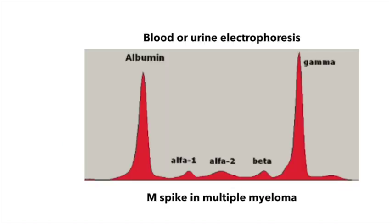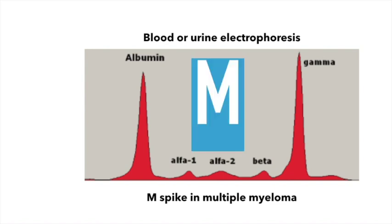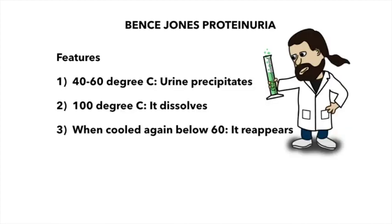On blood electrophoresis, due to the increase in gamma globulins, there will be an M band forming an imaginary M — hence called the M spike. These immunoglobulins are seen in blood, but since they are larger in size, they do not cross the kidneys and hence cannot be seen in urine electrophoresis unless there is damage to the kidney later in the disease, at which point you can see the M spike in urine electrophoresis as well.